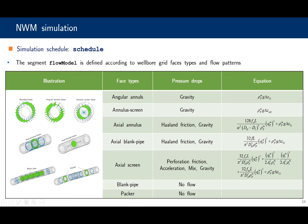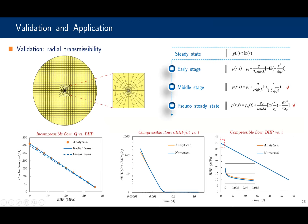Now let's see the validation of our model. First is the radial transmissibility. We build a Cartesian grid with a circular boundary and a gradual radial grid inside. Because the radial transmissibility is derived from the steady pressure distribution, the result of steady-state flow matches exactly with the reference. For compressible flow, the results also match well, except for the early stage flow. The early stage is very short — maybe hours to days — and for field-scale simulation the steady transmissibility is accurate enough.